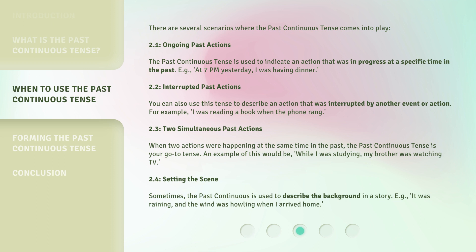2.4: Setting the Scene. Sometimes the Past Continuous is used to describe the background in a story. For example: it was raining, and the wind was howling when I arrived home.